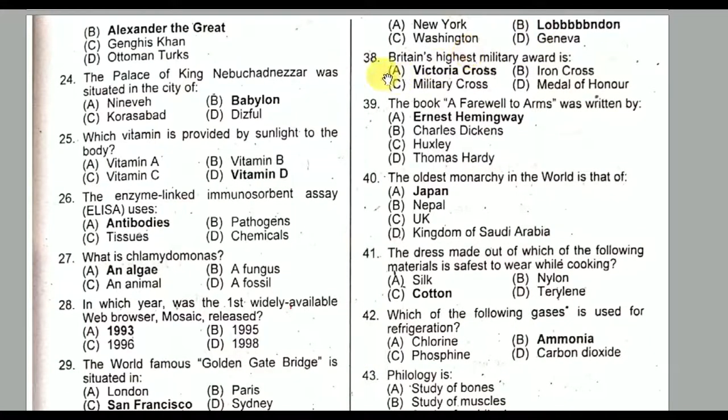Question number thirty-eight: Britain's highest military award is the Victoria Cross. These are previous paper MCQs; you can watch previous videos for discussion of these.